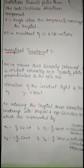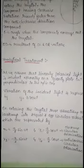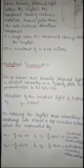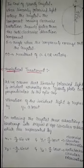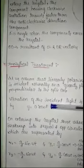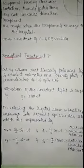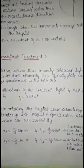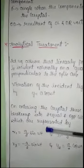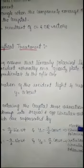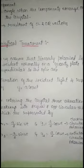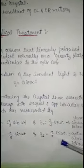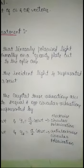Analytical treatment of Fresnel's explanation. Let us assume that when a linearly polarized light is incident normally on the quartz plate, which is cut perpendicular to the optic axis, the vibration of the incident light is represented by Y = A cos ωt. On entering the crystal, these vibrations are broken up into two equal and opposite circular vibrations: X1 and Y1, which represent clockwise circular polarization, and X2 and Y2, which represent anticlockwise circular polarization.